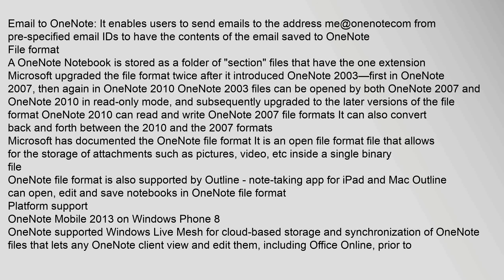Email to OneNote enables users to send emails to the address me@onenote.com from pre-specified email IDs to have the contents of the email saved to OneNote. Regarding file format, a OneNote notebook is stored as a folder of section files that have the .one extension. Microsoft upgraded the file format twice after introducing OneNote 2003 — first in OneNote 2007, then again in OneNote 2010. OneNote 2010 can read and write OneNote 2007 file formats and convert back and forth between the two. The format is open and allows storage of attachments such as pictures and video inside a single binary file. OneNote file format is also supported by Outline, a note-taking app for iPad and Mac.